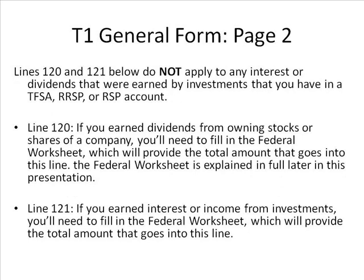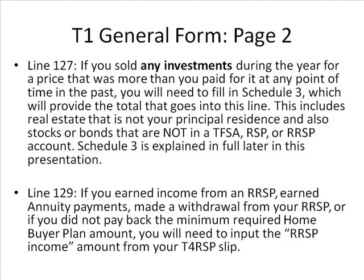Lines 120 and 121 do not apply to any interest or dividends earned by investments in a TFSA, RRSP, or RRSP account. Line 120: if you earned dividends from owning stocks or shares of a company, you will need to fill in the federal worksheet, which will provide the total amount for this line. Line 121: if you earned interest or income from investments, you will also need to fill in the federal worksheet. Line 127: if you sold any investments during the year for more than you paid for them, you will need to fill out Schedule 3, which provides the total for this line. This includes real estate that is not your principal residence and stocks or bonds not in a TFSA, RRSP, or RRSP account. Schedule 3 is explained in full later in this presentation.